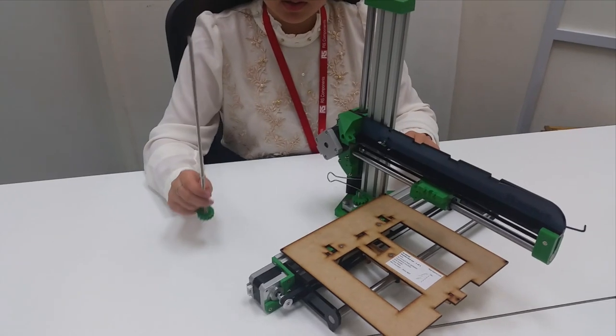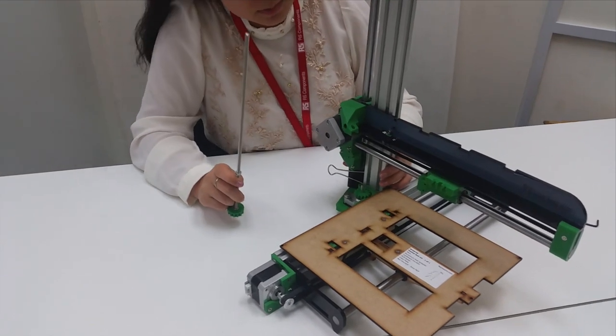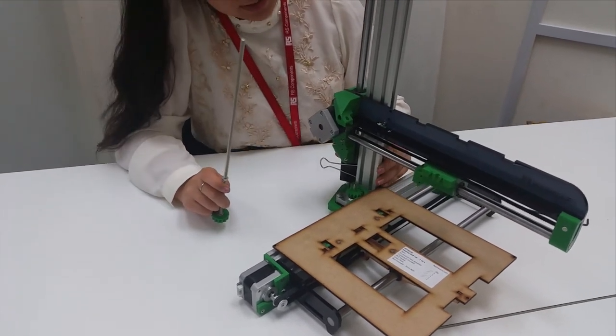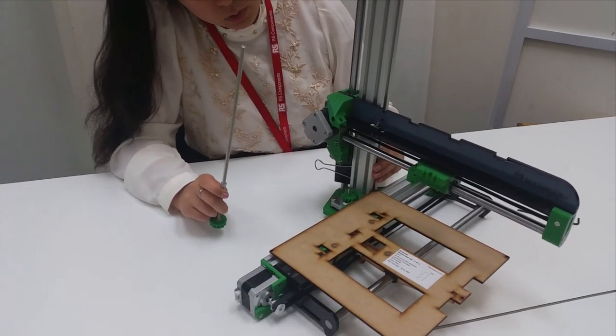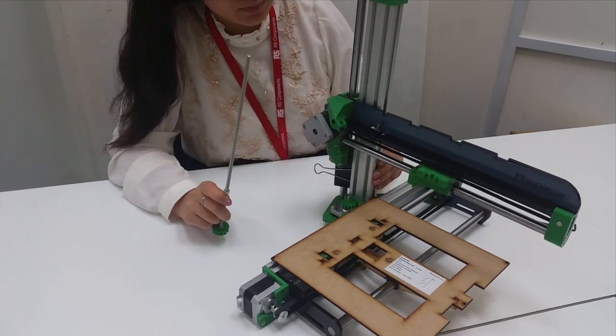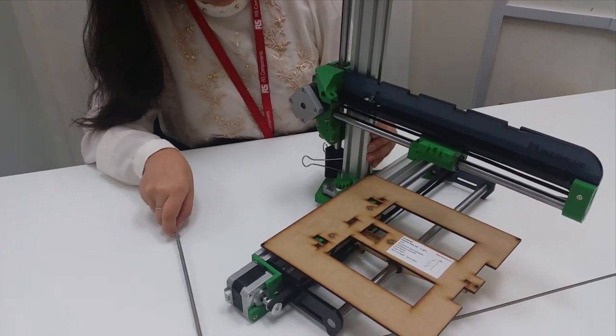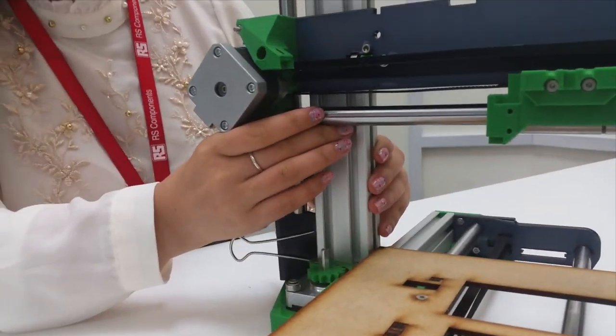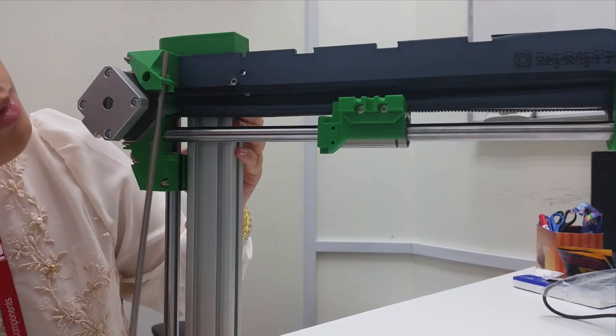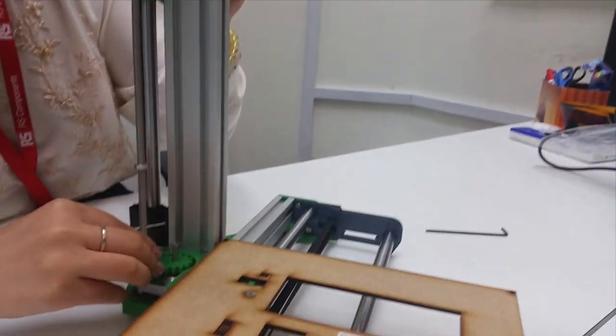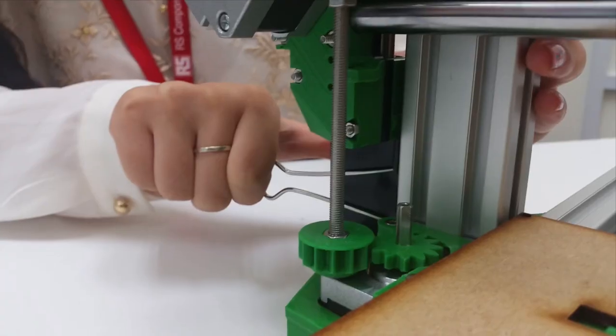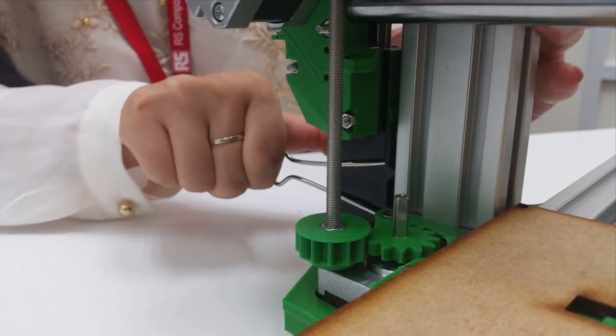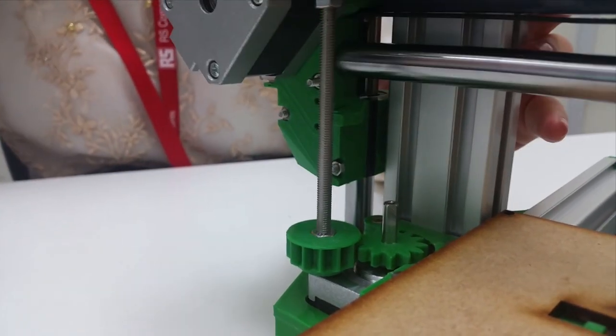I'm going to insert this rod inside my x-axis so that my x-axis will not fall down during printing. This is where the paper clip helps me hold the x-axis. After installing this rod, you can remove the paper clip.